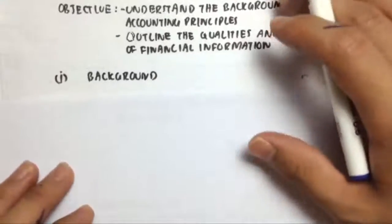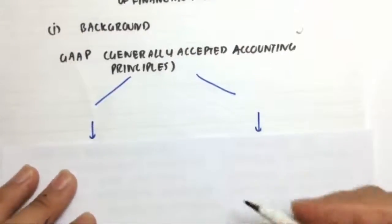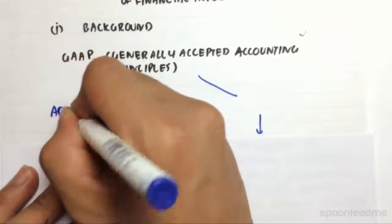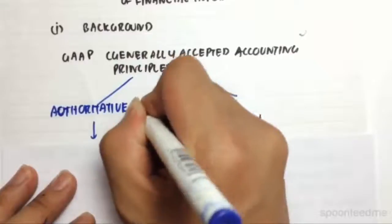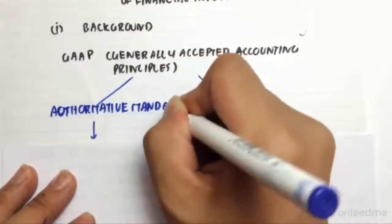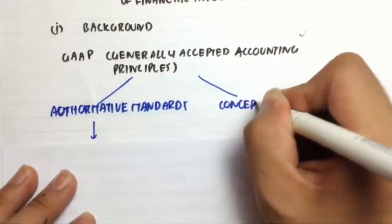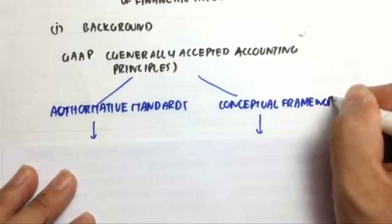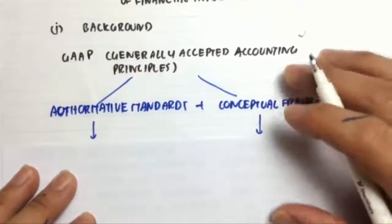So let's move on to the background. GAAP or Generally Accepted Accounting Principles are constructed of authoritative standards, so things that you have to stick to or the rules, and also the conceptual framework. So this plus this adds up to the Generally Accepted Accounting Principles.